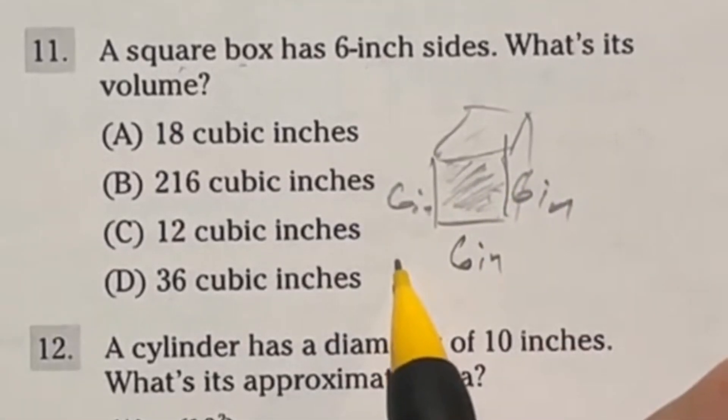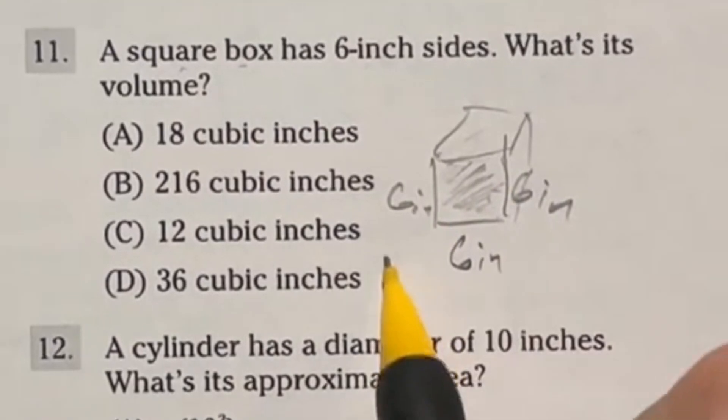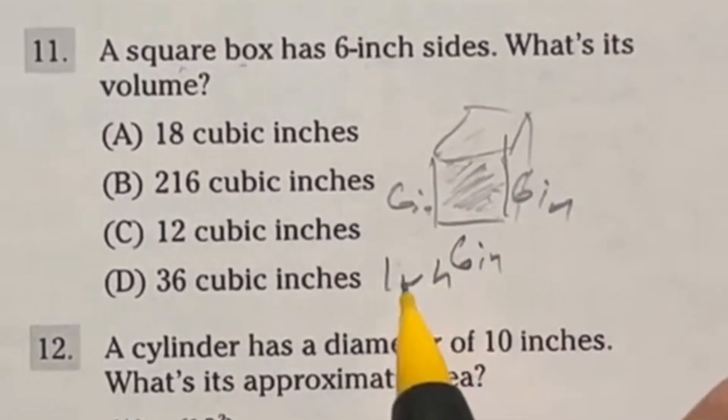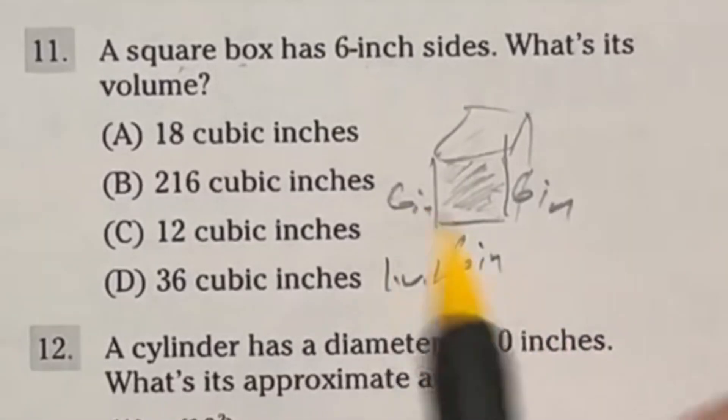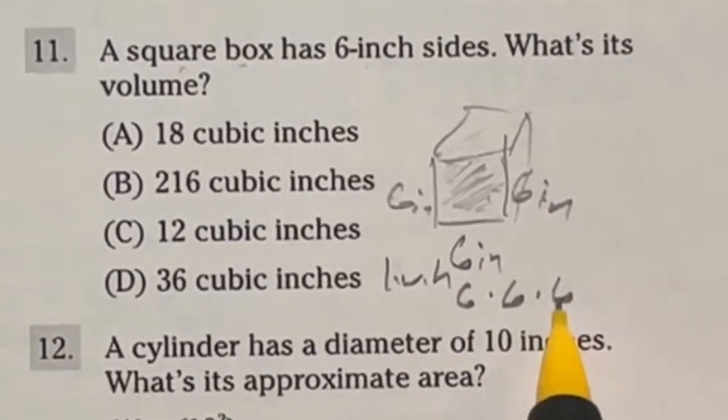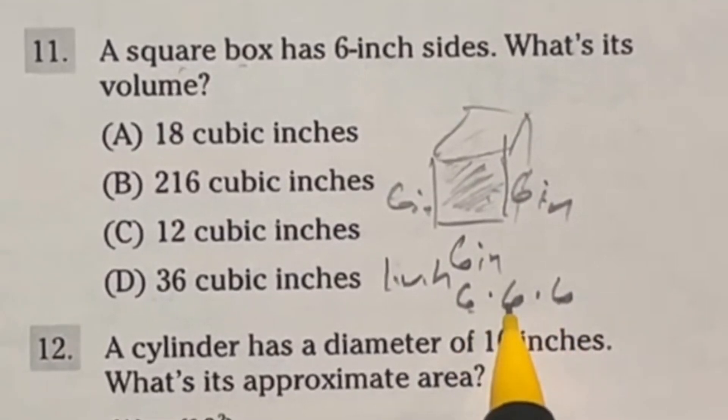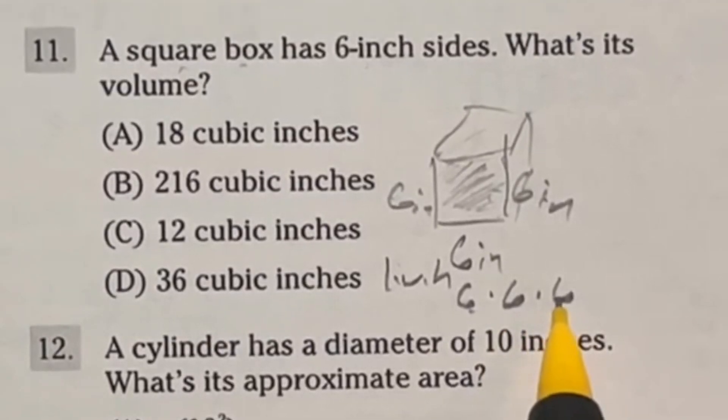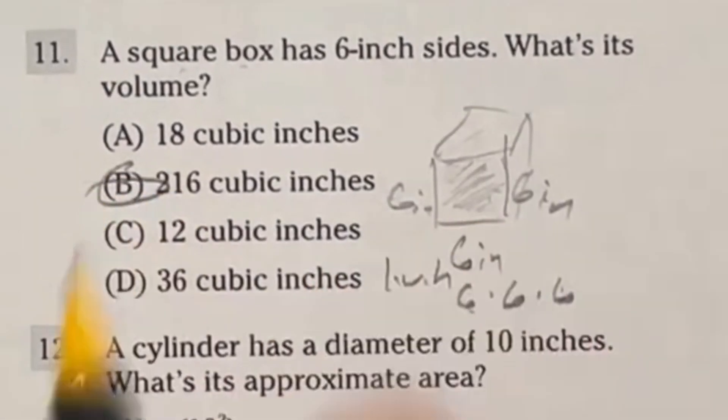So how do we go about finding volume? For finding volume of a rectangular prism, which this is, you would just do length times width times height. Now in this case, all of those are six. So we're going to be doing six times six times six. So six times six gives us 36 right off the bat. Multiply that by another six and you get 216, which means our final answer here is B.